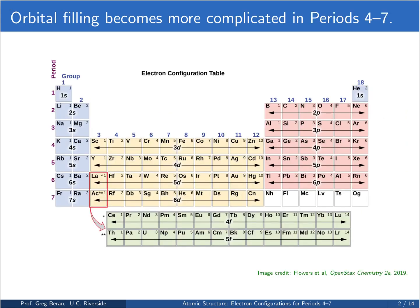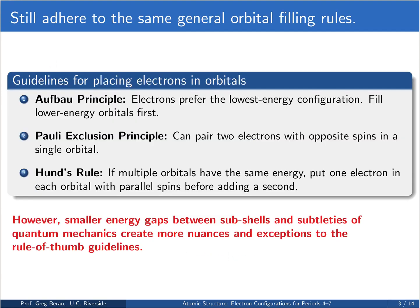Orbital filling becomes more complicated in periods four through seven. The reason for that is the d orbitals start getting filled in period four, and in period six we start having f orbitals involved. Now we still adhere to the same general filling rules as before, that is the Aufbau Principle, the Pauli Exclusion Principle, and Hund's Rules. However, the smaller energy gaps between the subshells and the subtleties of quantum mechanics mean that there are a lot more nuances and exceptions to the general rule of thumb guidelines compared to what we saw in the first three periods.